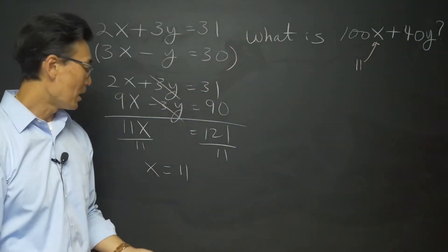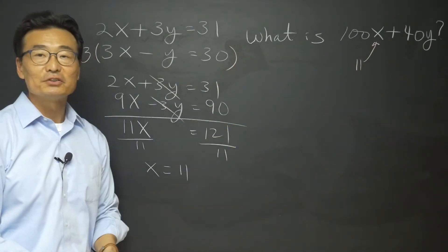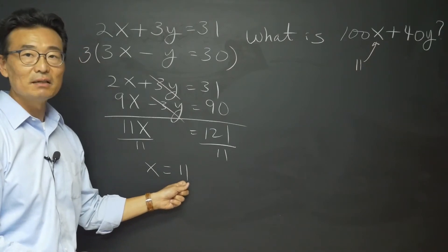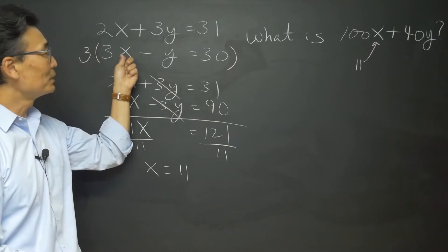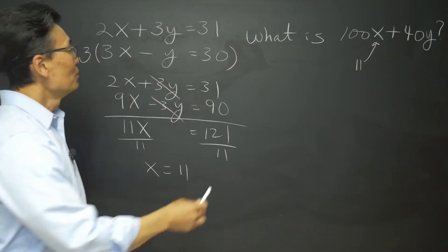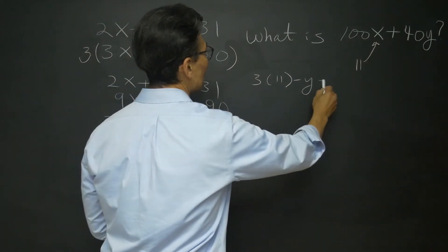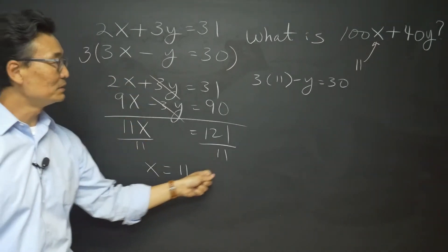Now all we need to do is go ahead and find the value of y so we could plug it into the 40y. How do we find the y? Well, let's take that 11, plug it into the second equation. You could have done it to the first as well, but I prefer the second. So it's going to be 3 times 11 minus y equals 30. So again, notice instead of the x I have the 11 in the x position.